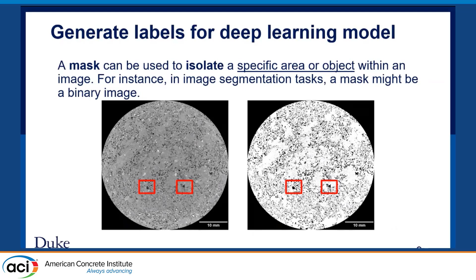Before we put everything into the machine learning model, we do a bit of labeling. We generate a mask, which is used to isolate a specific area or object in an image. The object we're labeling is the target we want to segment out — essentially we're teaching the model what a pore looks like so it can give us more accurate results on our dataset. These two images show the original image and its corresponding mask; we label everything in the original image that is considered a pore, and the red boxes highlight two example pores we picked out for labeling.